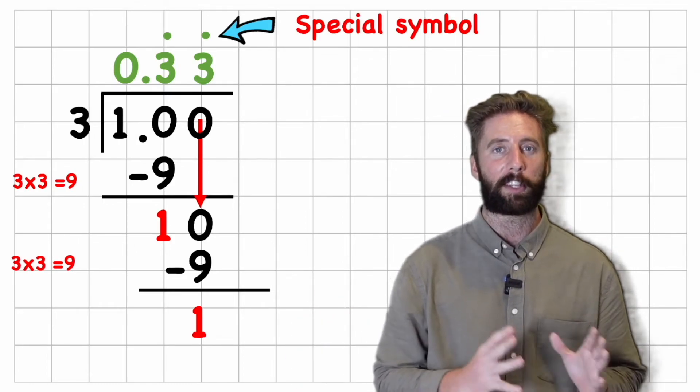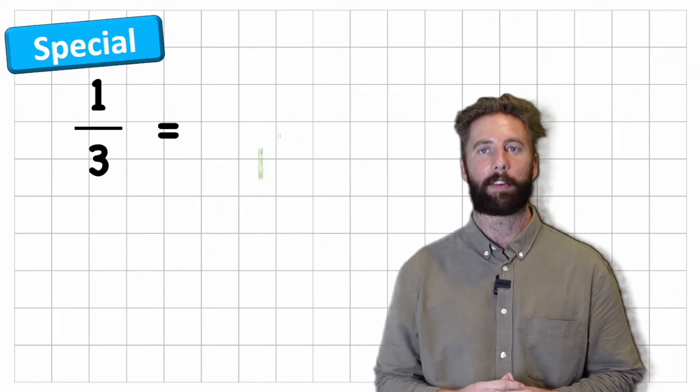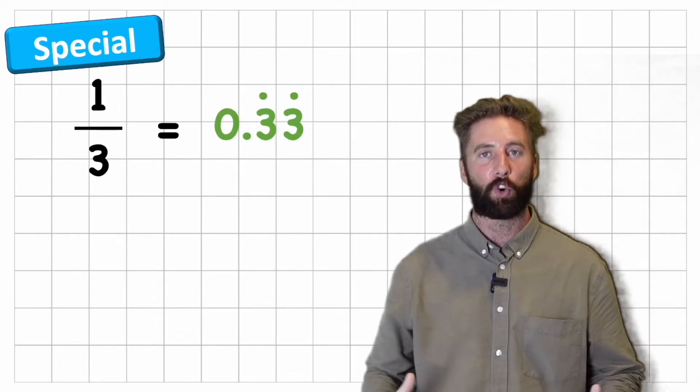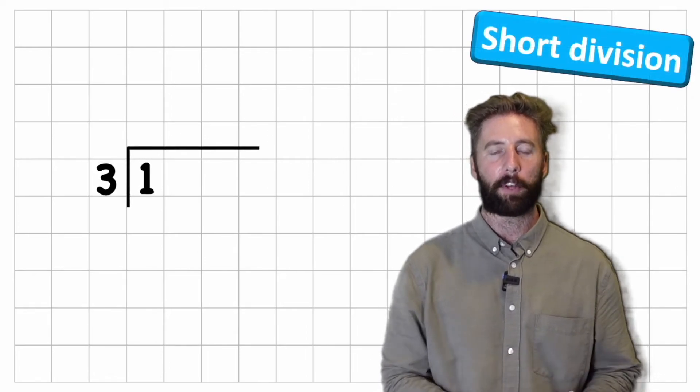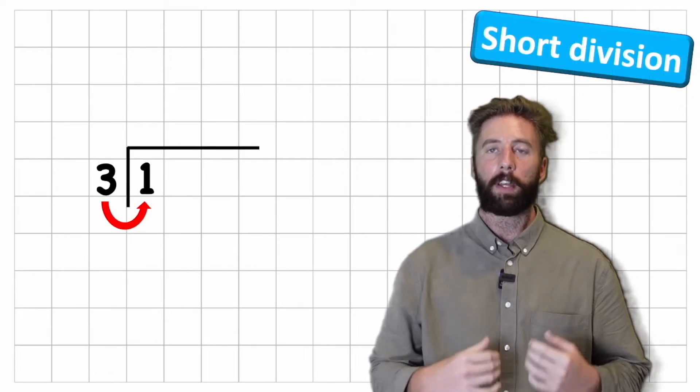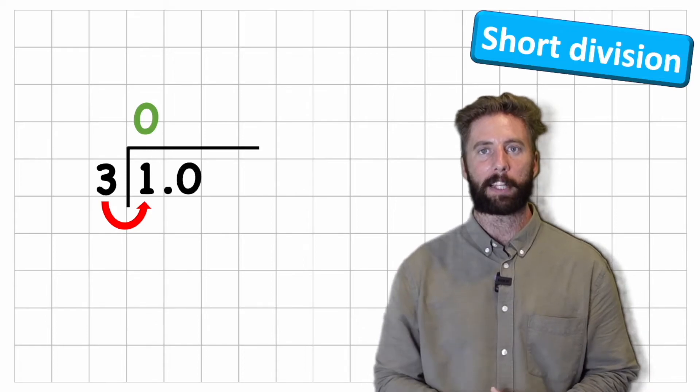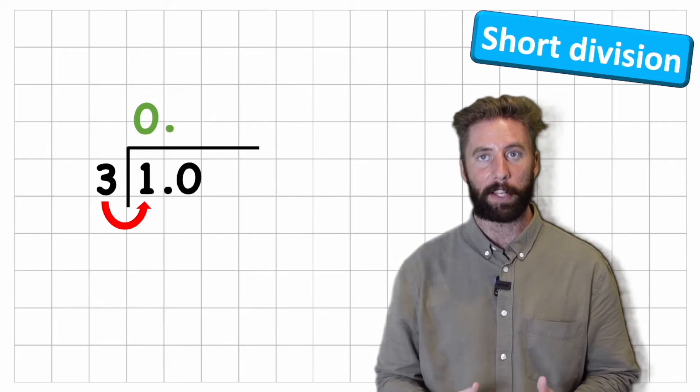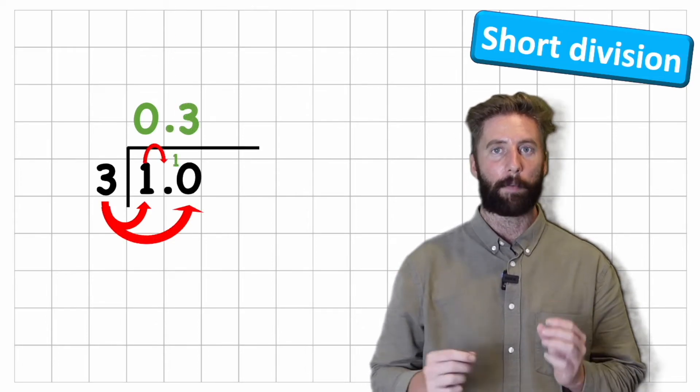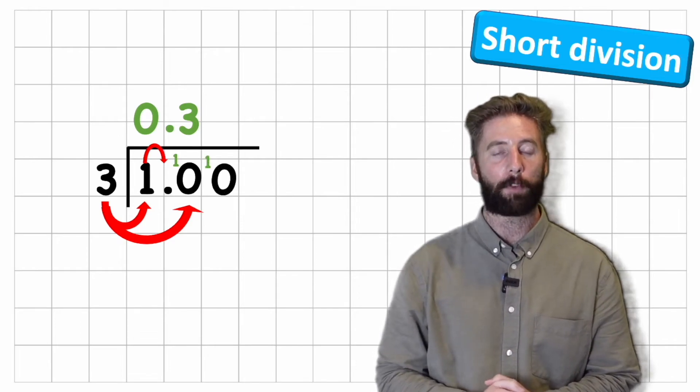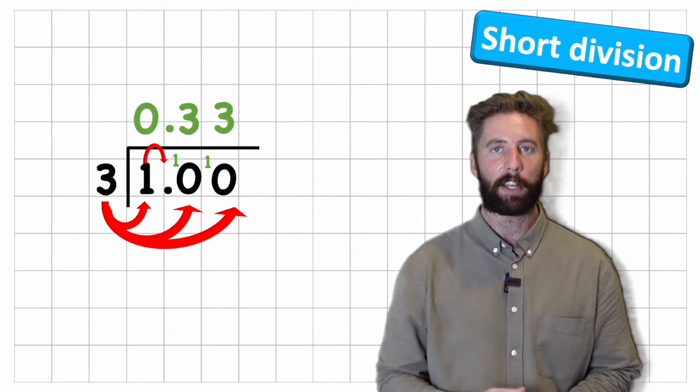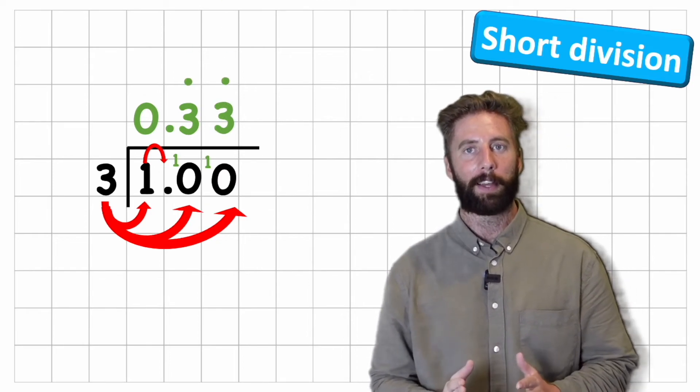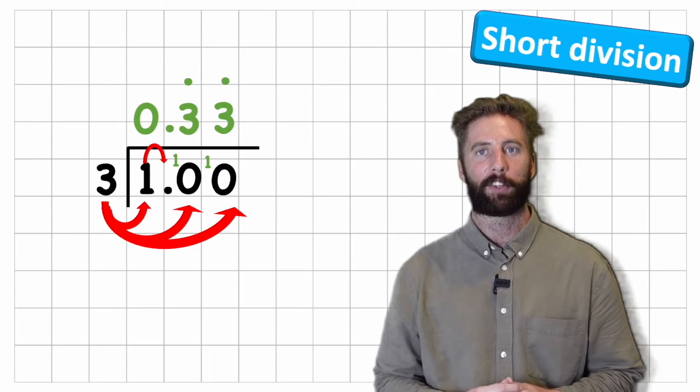So the answer to 1 third as a decimal is 0.3 recurring. Let's have a look at that in the short division method as well. So I'll put back my division. 1 divided by 3. How many 3s are there in 1? 0. Don't forget to put my decimal. And then how many 3s are there in ten? Three. How many have we got left over? One. Add that to the next column, don't forget to add my zero, so I have ten again. How many threes are there in ten? Three. How many left over? One. And we have that same pattern again. So the answer, again, is 0.3 recurring.